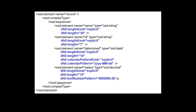We also need additional DFDL annotations to describe the record element and the sequence within the record element. For the record element, we have a DFDL property that specifies that the length of the record is implicit, which means that the length of the record element is determined by the length of its children. For the sequence, we have a DFDL property that specifies that the sequence is ordered, indicating that the child elements always appear in the order that they are declared.